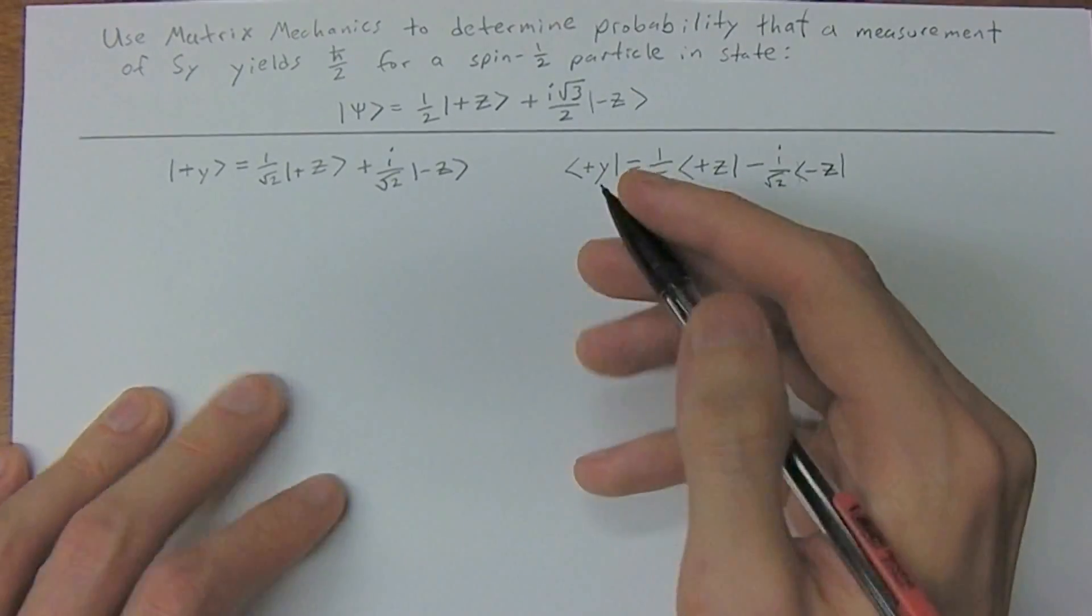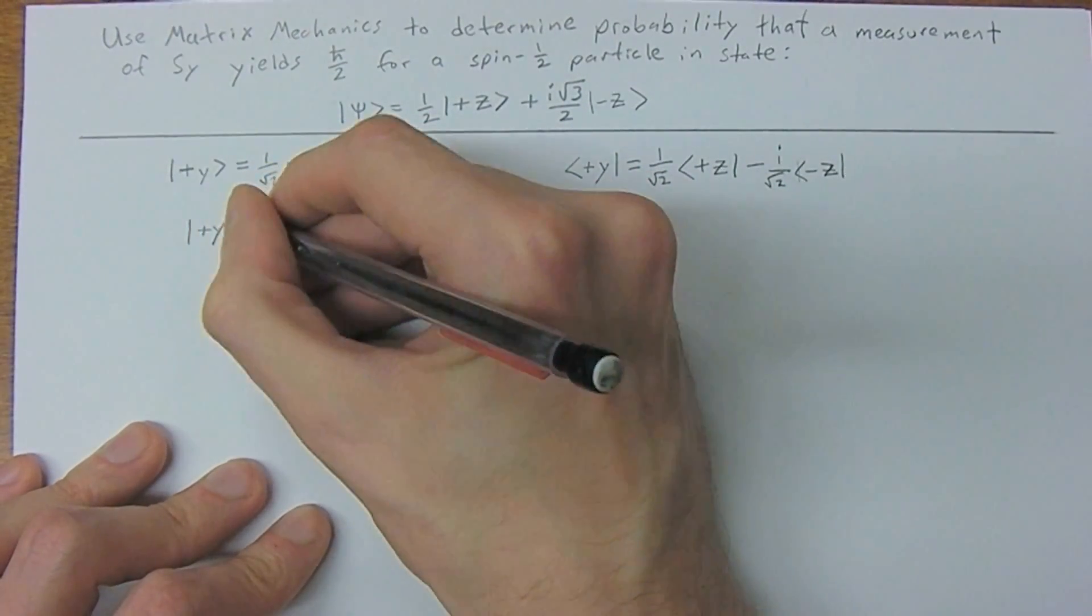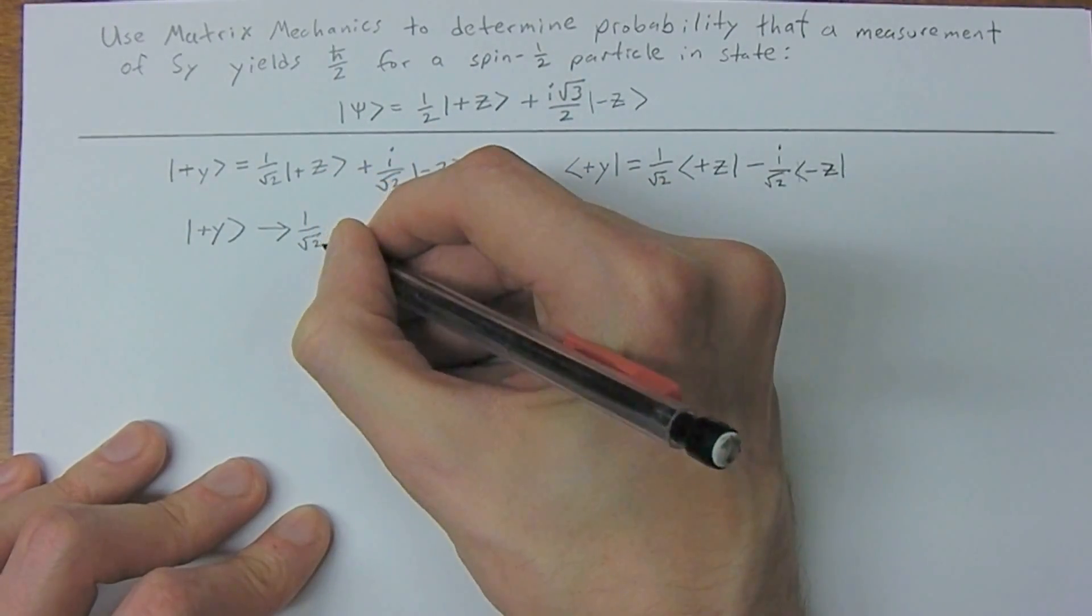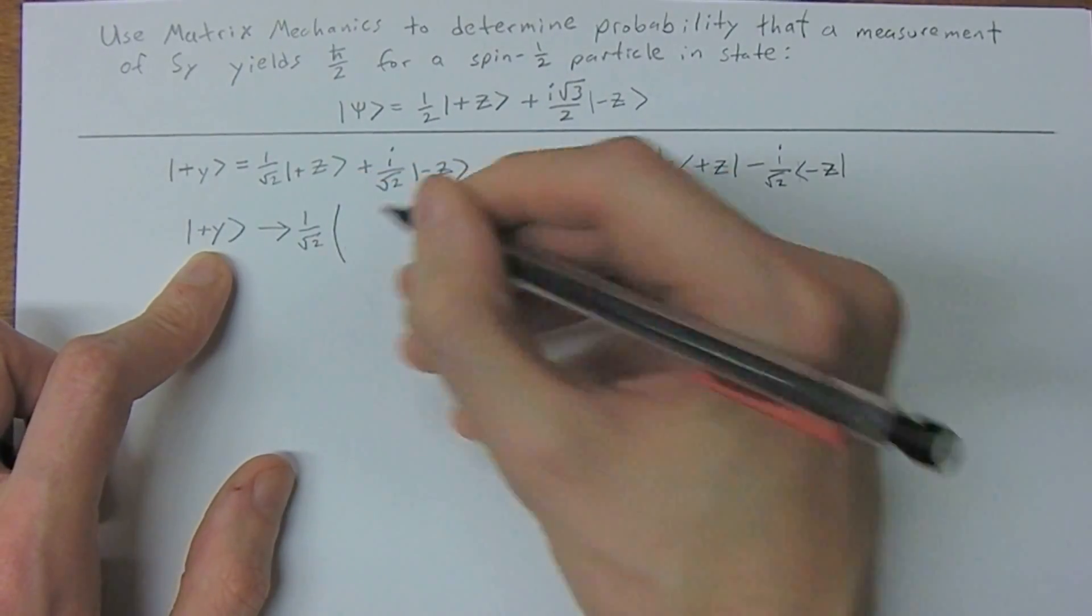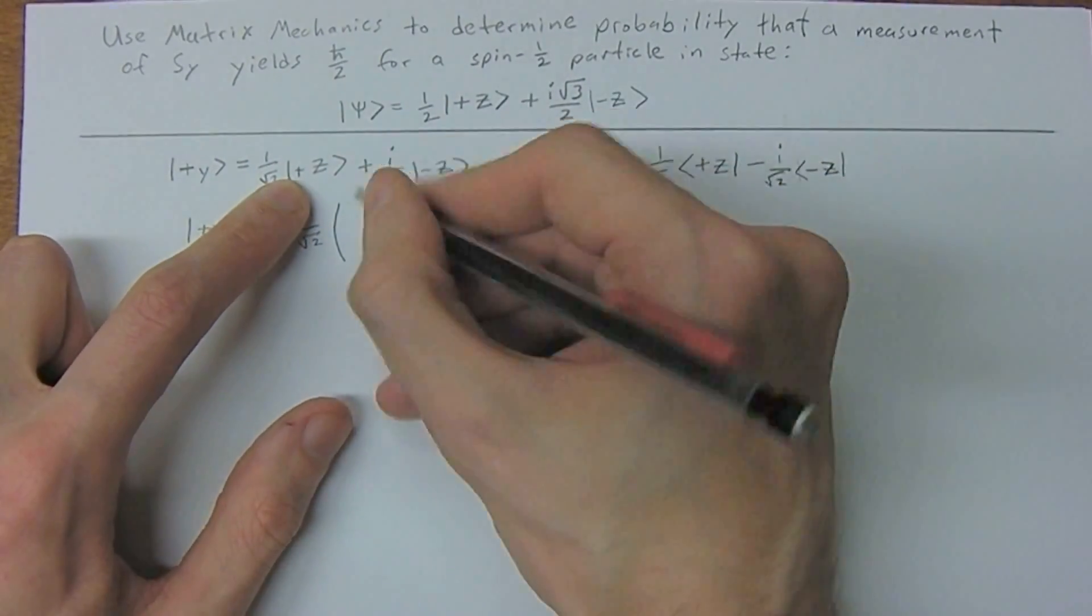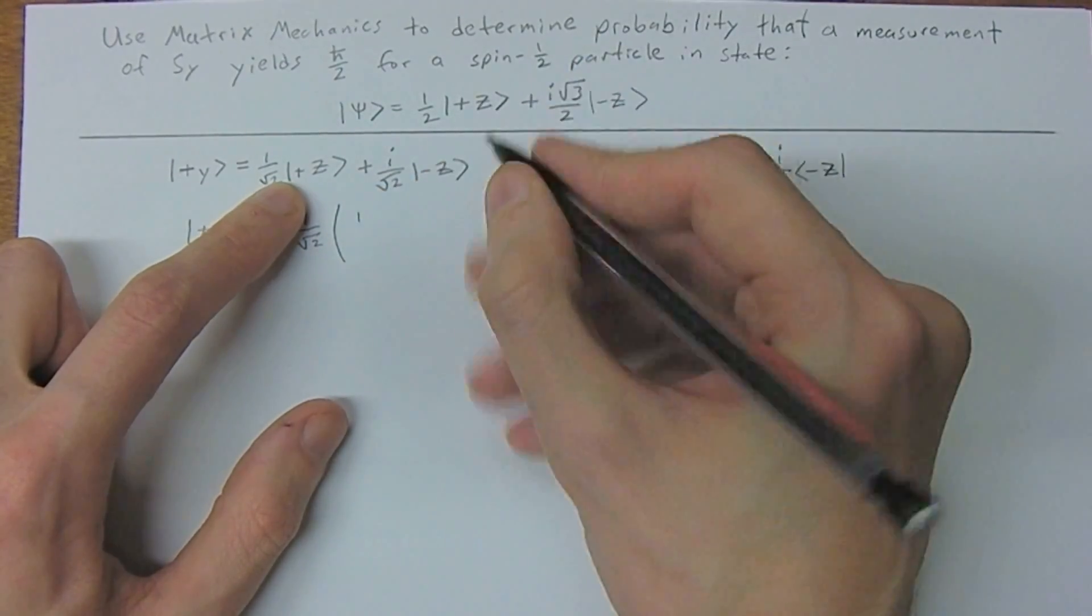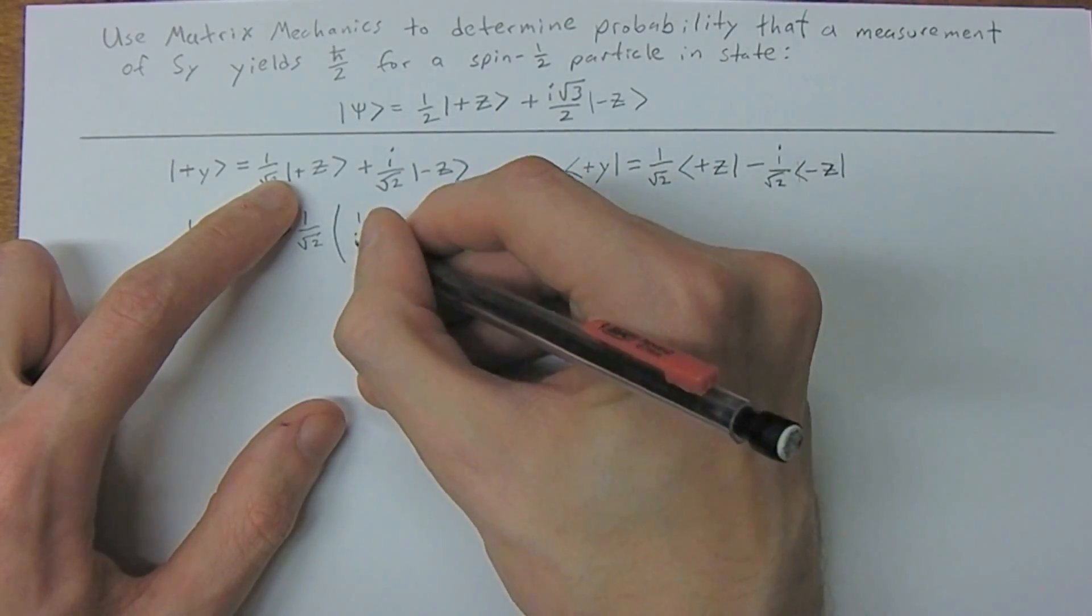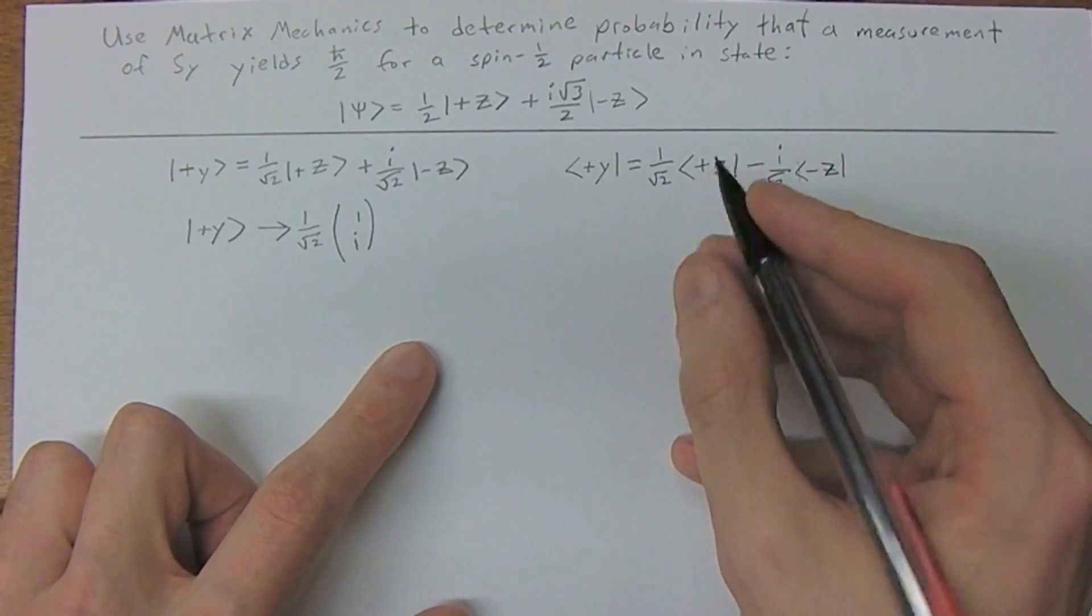So we can actually represent this as a matrix, which is what it actually is. So we're going to have 1 over square root of 2, and now for a ket, we have a column matrix, and we're going to represent plus z and minus z as just 1. And then we're going to have i down here.